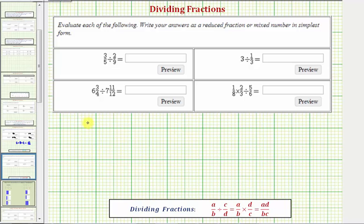So we first have three fifths divided by two ninths. Well, dividing by two ninths is equivalent to multiplying by the reciprocal of nine halves. So we can write this as three fifths times nine halves. Now before we multiply, we want to see if there are any common factors between the numerators and denominators. In this case, there are not, so we multiply.